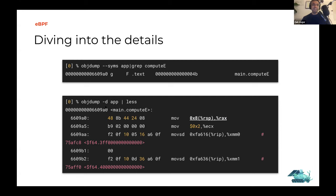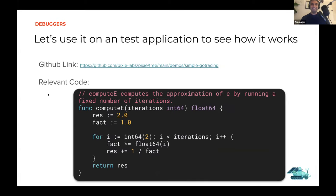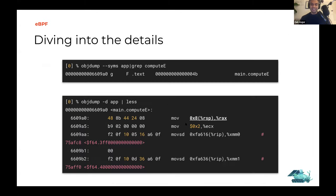The function signature is computeE, taking an int64 argument called iterations and returning a float64 value. So we know the input argument is stored in RAX. Now, how do we actually use uprobes? If you have an app binary, you have your main.computeE function starting at the address we saw. What we do is ask the kernel — using BPF and uprobes — that when you get to this address, instead of executing main.computeE, run our uprobe hook. It inserts what's called a soft interrupt, which traps into the kernel and executes your BPF program instead.